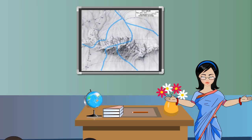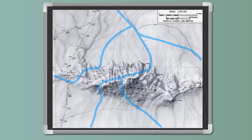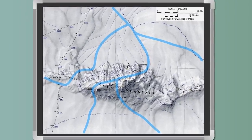A map is a representation of the spherical earth on a flat surface. Maps show us how places are positioned in relation to each other.